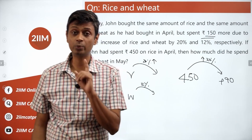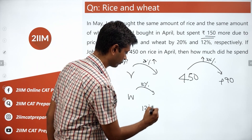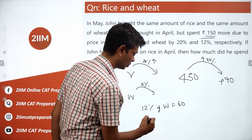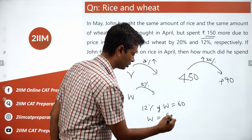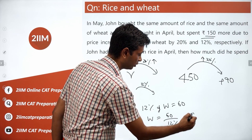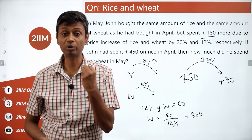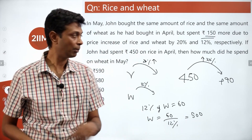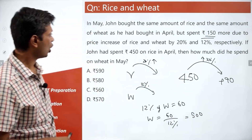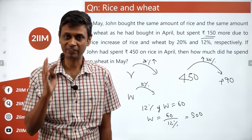Now, the rate at which wheat price increases is 12%. 12% of wheat price is 60, or wheat is 60 by 12%. 60 by 12 is 5, so this should be 500. In April, he spends 500 rupees on wheat, apart from having spent 450 on rice. In April, he spends 500.